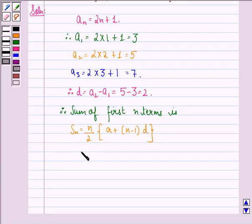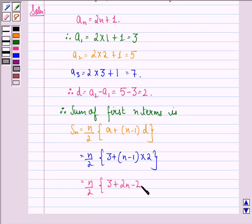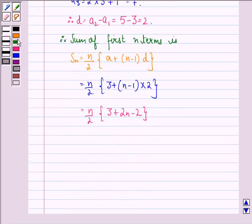That is equal to n by 2 into 3 plus n minus 1 into 2, that is equal to n by 2 into 3 plus 2n minus 2, and that is equal to n by 2 into 1 plus 2n.